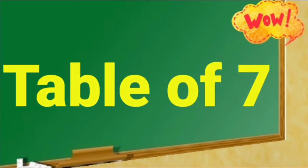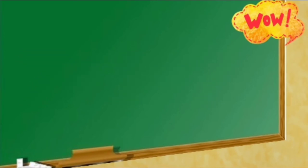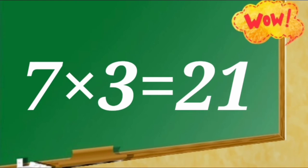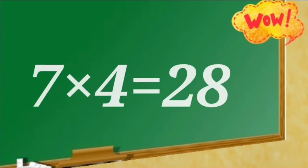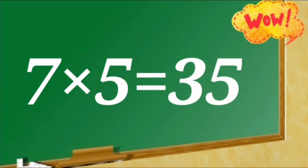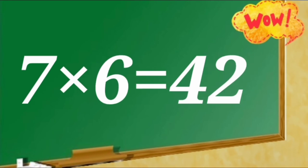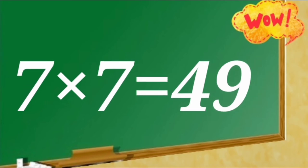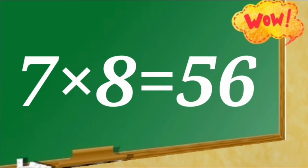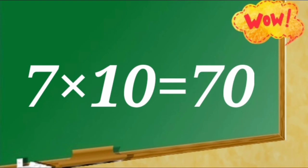Table of 7. 7 ones are 7, 7 twos are 14, 7 threes are 21, 7 fours are 28, 7 fives are 35, 7 sixes are 42, 7 sevens are 49, 7 eights are 56, 7 nines are 63, 7 tens are 70.